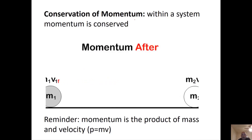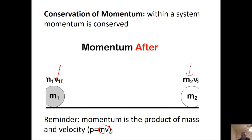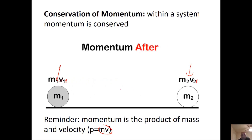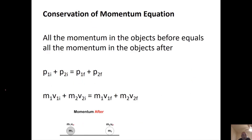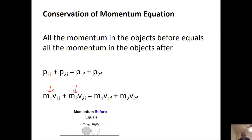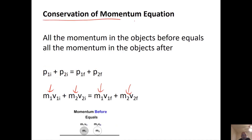The conservation of momentum says that all the momentum — mass times velocity — before equals mass times velocity afterwards. You add the mass times velocity initially of the first object plus the mass times velocity initially of the second object, and that equals the mass times velocity of the first object final plus the mass times velocity of the second object final. All the momentum before equals all the momentum after — that is what conservation of momentum means.